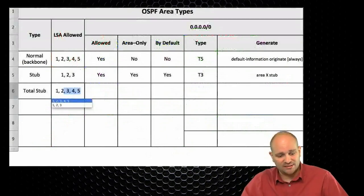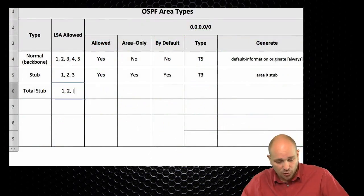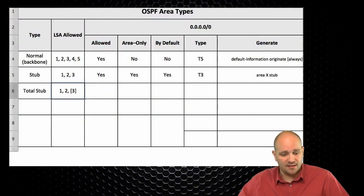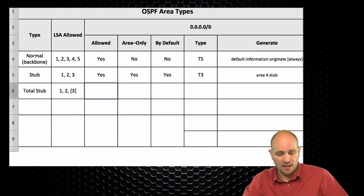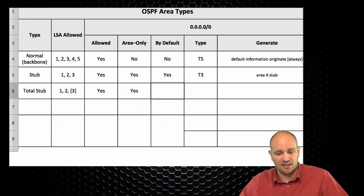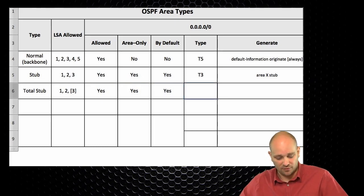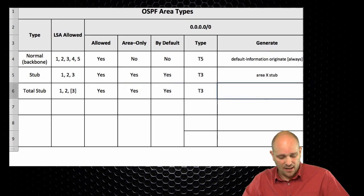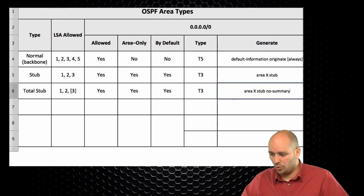What is allowed in a total stub area is type 1 and type 2 LSAs, plus one type 3 — the default route. The default route is allowed, can be injected directly into the area, is generated by default, and it is a type 3 route. The configuration is 'area X stub no-summary'.